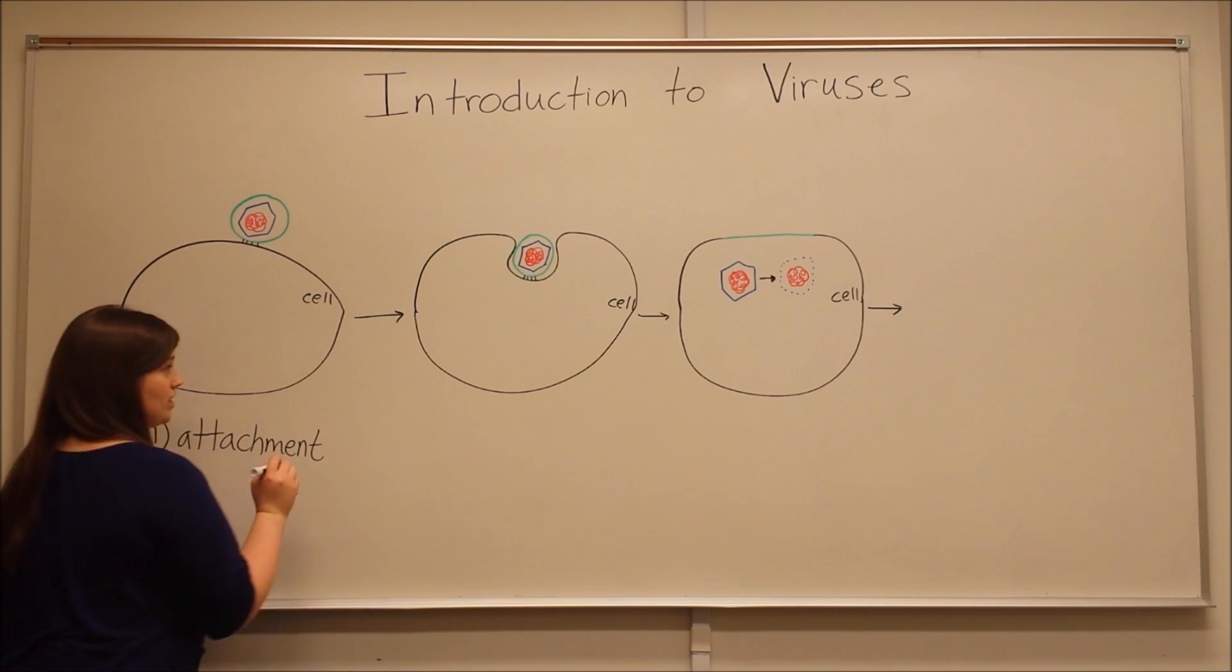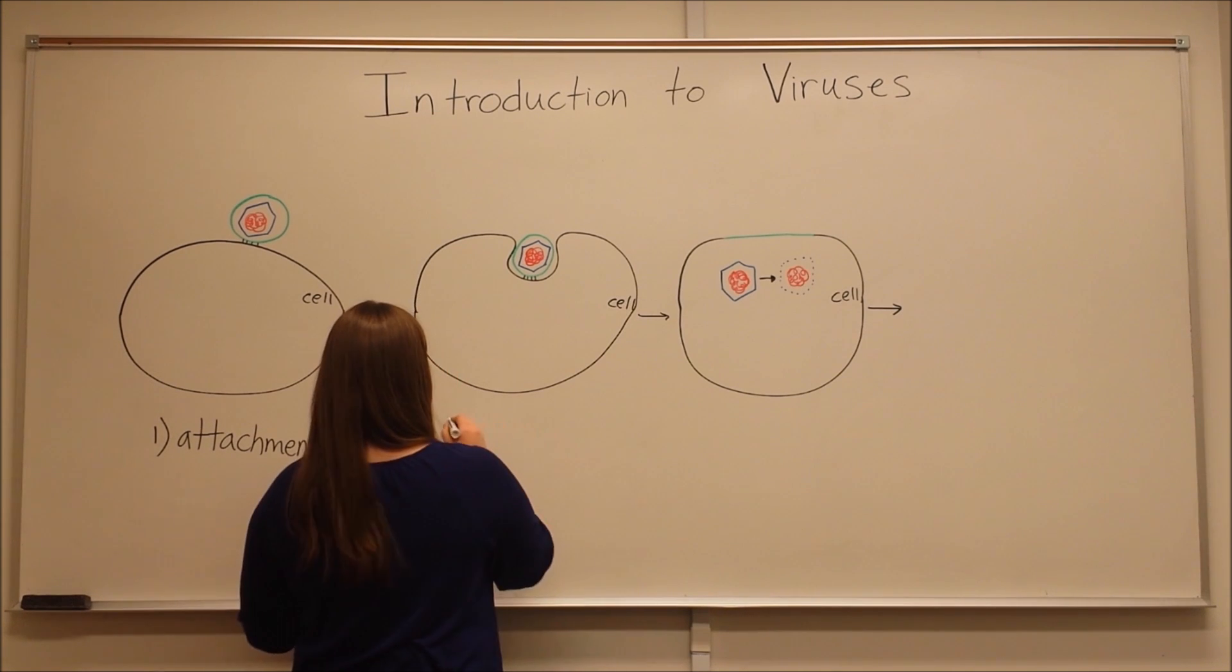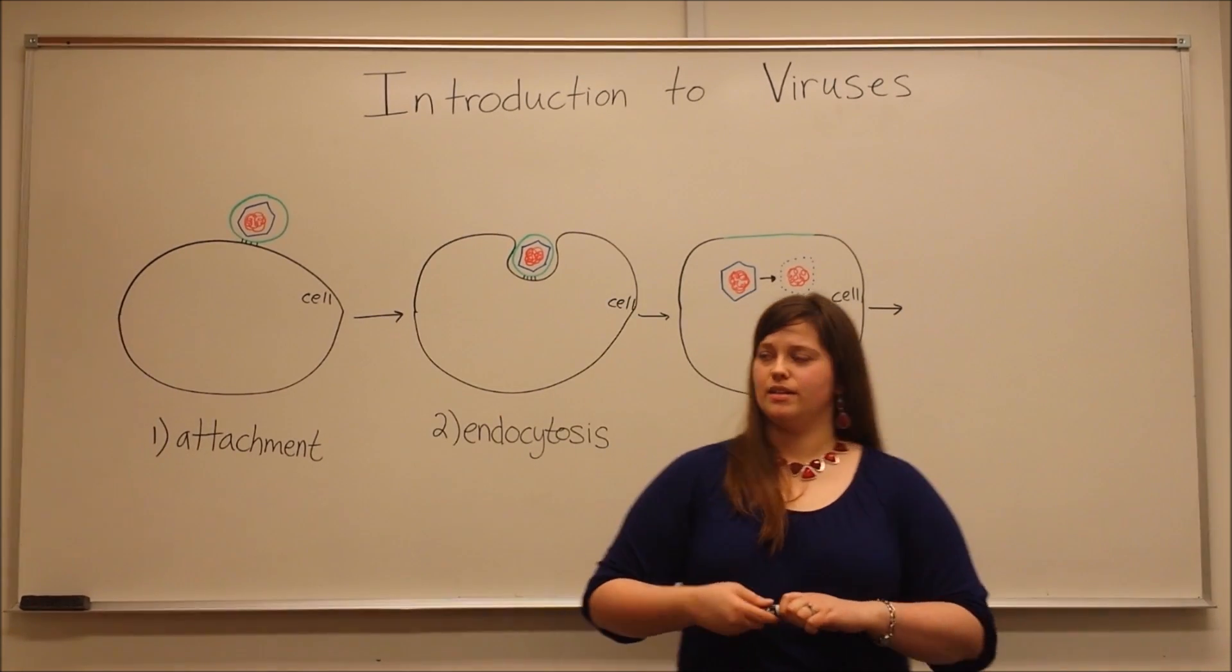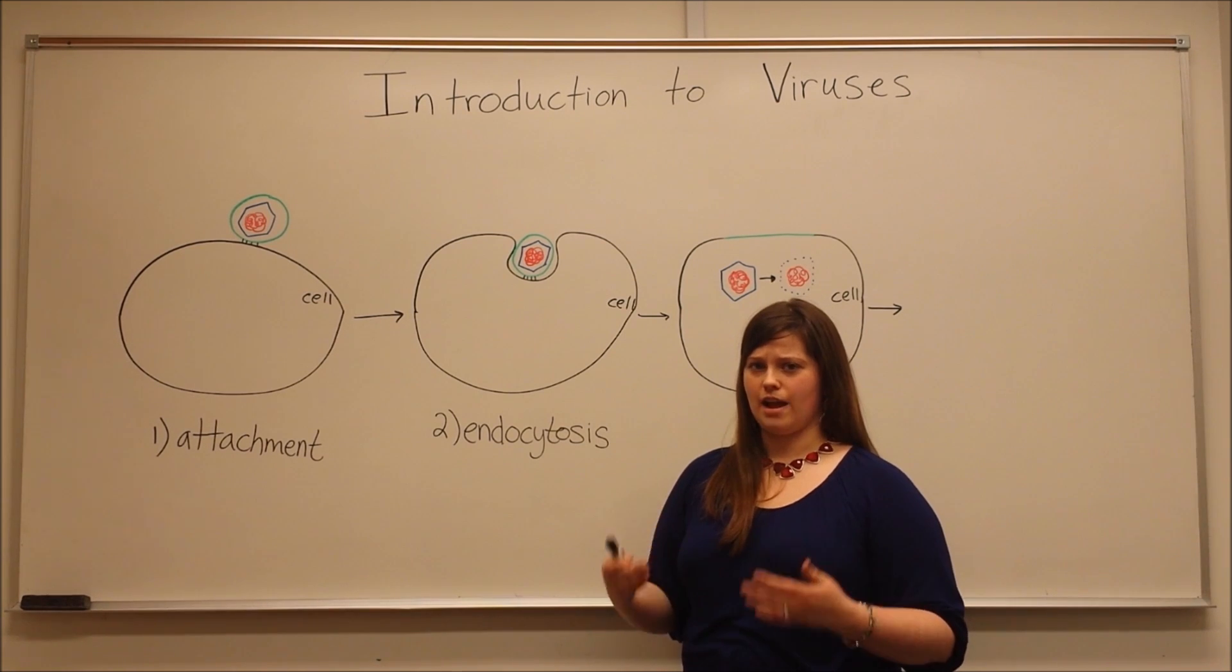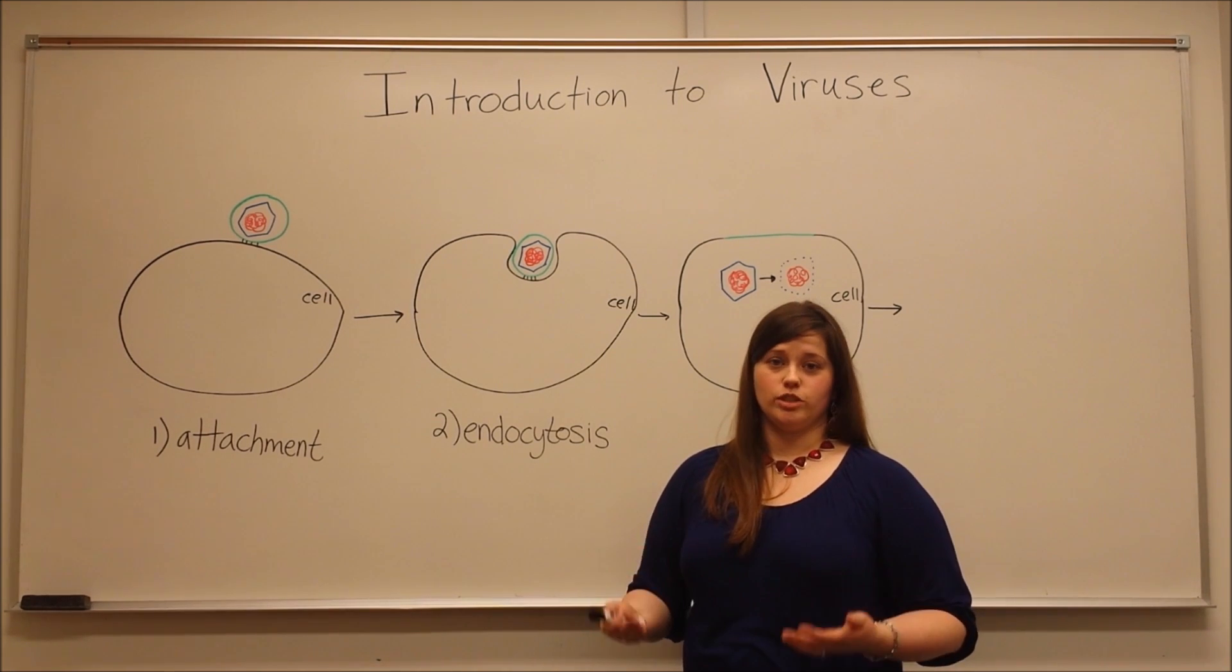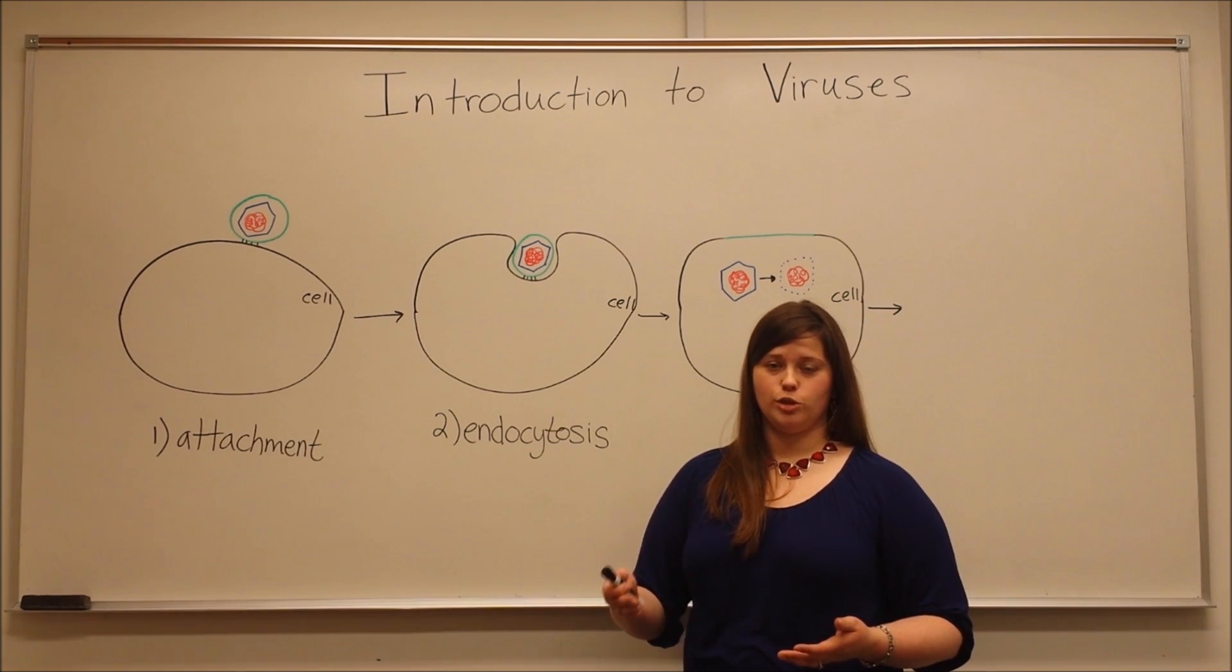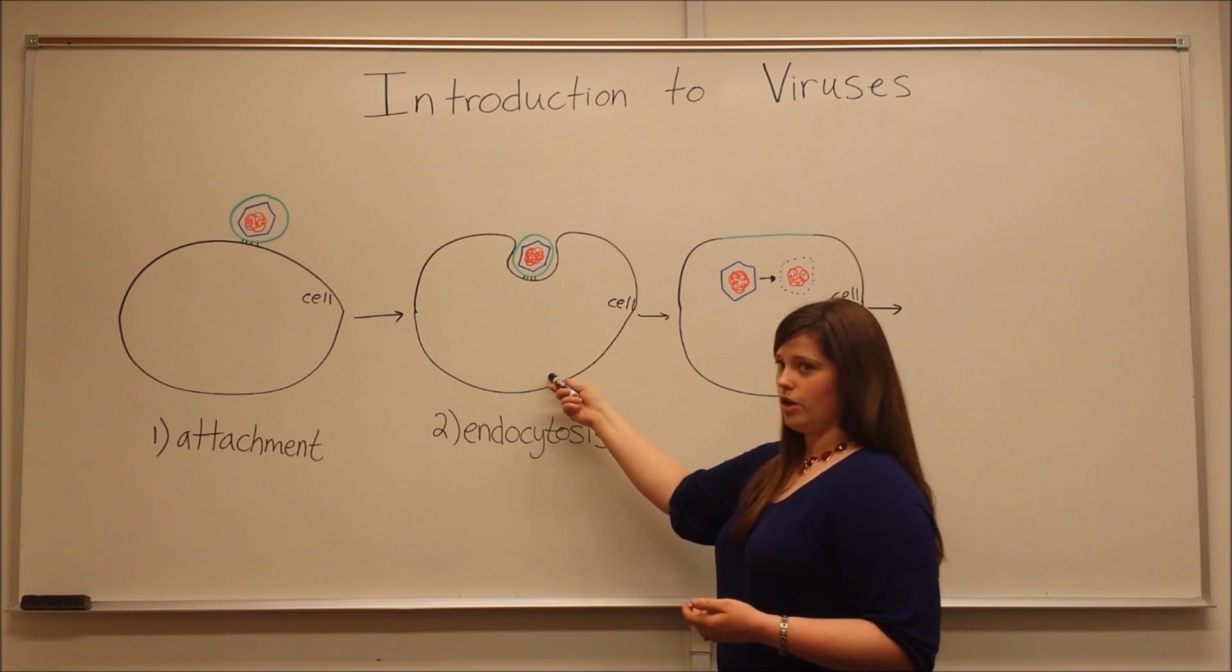Once attachment occurs, then you have the second step, which is endocytosis. This is what gives the virus what's called host restriction. It's only able to infect cells of a specific host based on the receptors that are present. Then the endocytosis occurs.